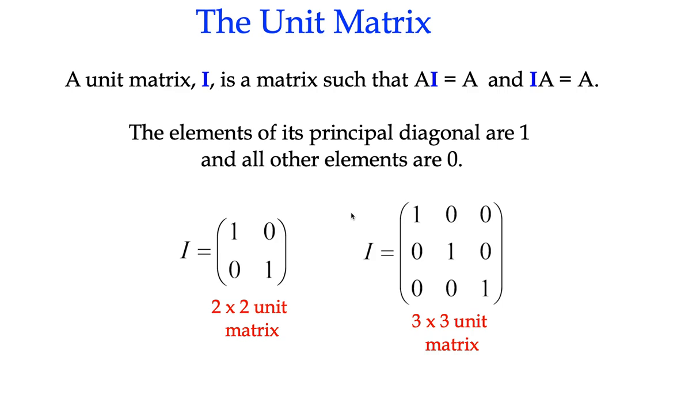So the unit matrix is such that if you multiply it by another matrix, then that matrix values stay the same. And although we know that matrix multiplication order is important, in the case of the unit matrix, it's not. Multiplying the unit matrix second makes no difference than if it's first.